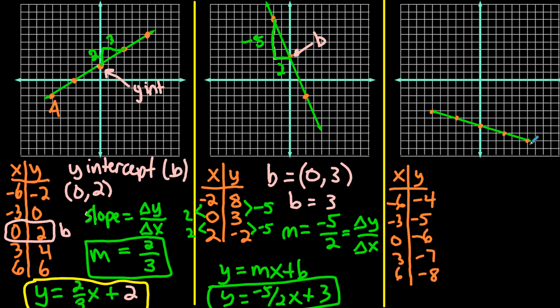Our y-intercept, or b in this case, is going to be right here. b is negative 6. And then our slope, if we count from one point to the next, we go down 1 over 3. So our slope is going to be negative 1 over 3.